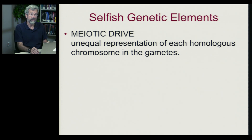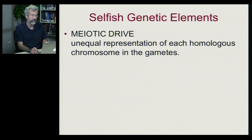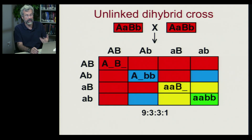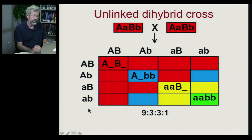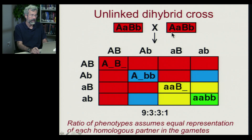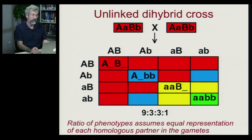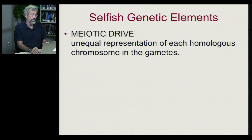The first class of selfish genetic elements involves a phenomenon called meiotic drive. With meiotic drive, you get an unequal representation of each homologous chromosome in the gametes. When we did dihybrid crosses in Mendelian genetics, we calculated ratios of different genotypes based on independent assortment, getting a 9:3:3:1 ratio with complete dominance in a double hybrid cross. This assumes equal representation of each homologous partner in the gametes. But with meiotic drive, there's unequal representation of chromosomes in the gametes.